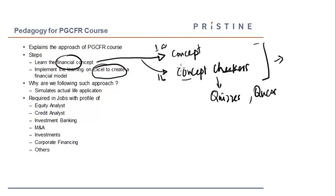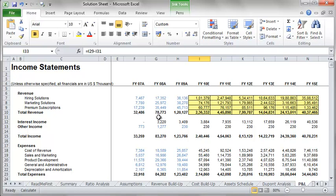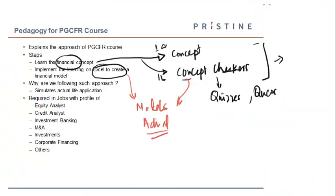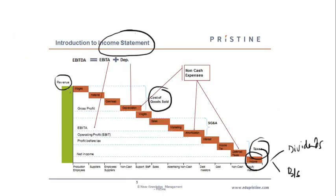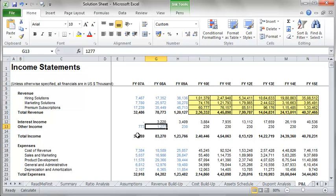Once you've understood the concepts — the income statement, balance sheet, cash flow statement, and various aspects of corporate finance — we take you through Excel implementation of the models. These are actual industry spreadsheet models that help you apply concepts in real life. For example, once you understand the income statement, we use real-life case studies like the LinkedIn model. LinkedIn's revenue comes from three parts: hiring solutions, marketing, and premium subscriptions; expenses include cost of revenue and sales, general and marketing expenses.